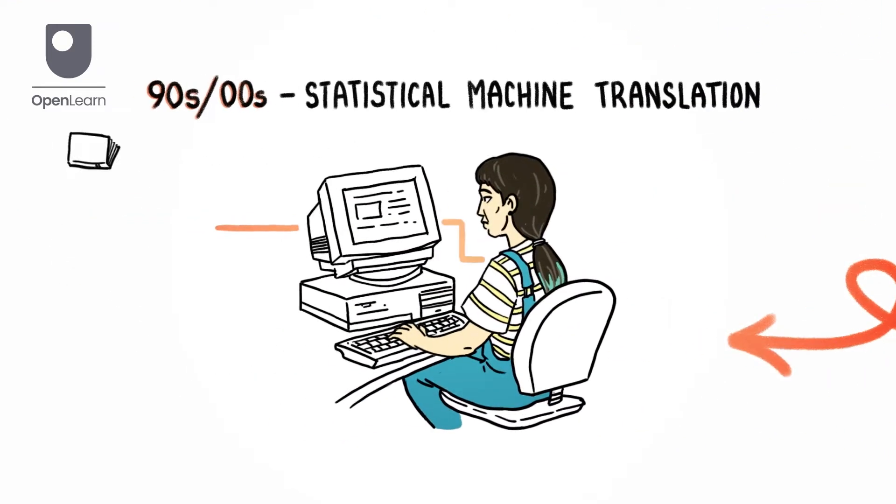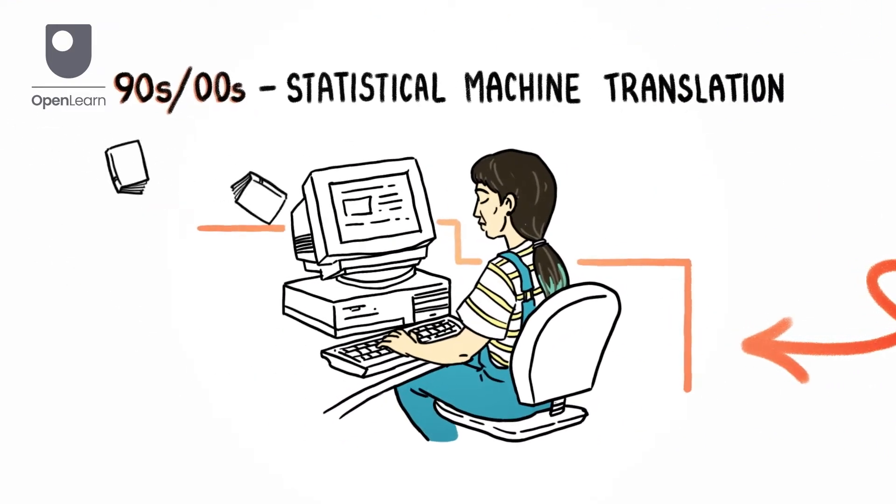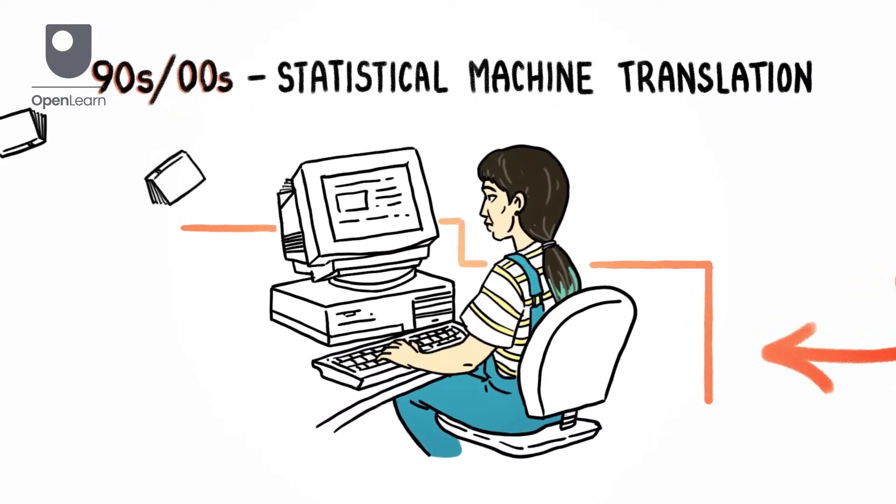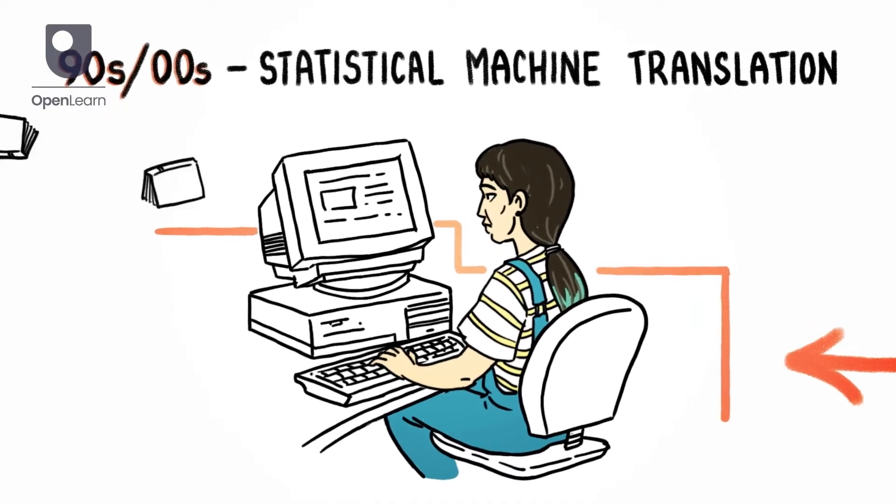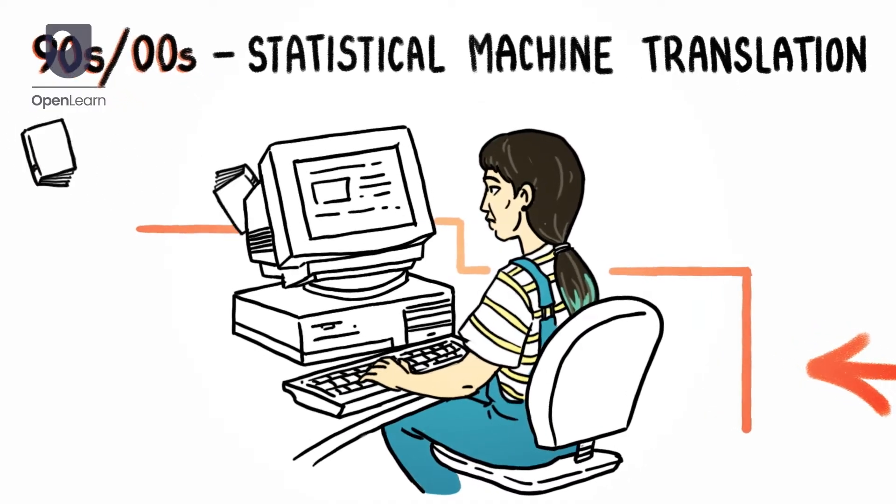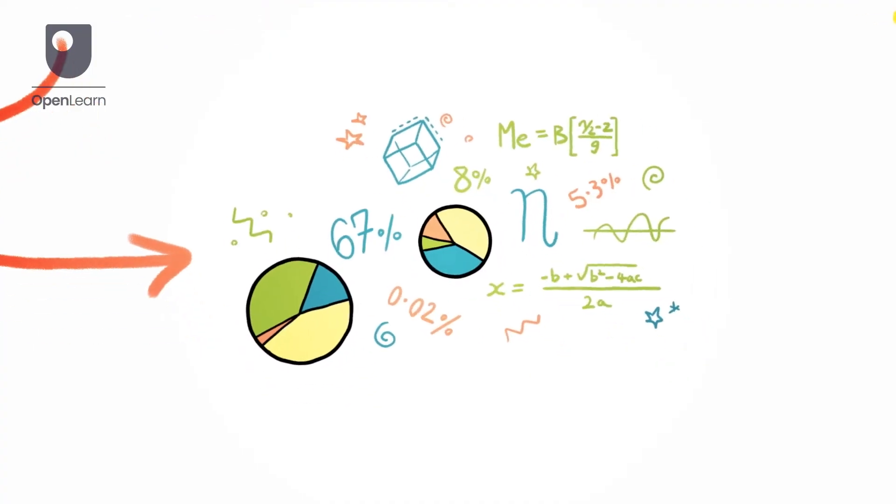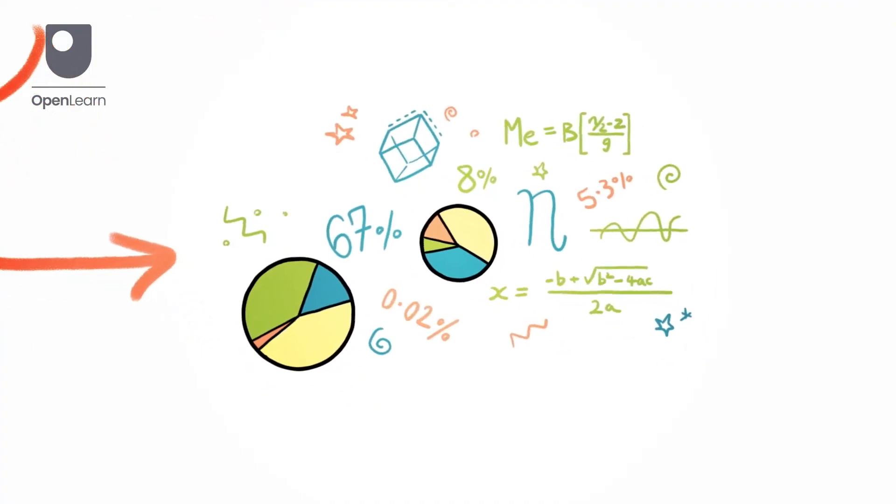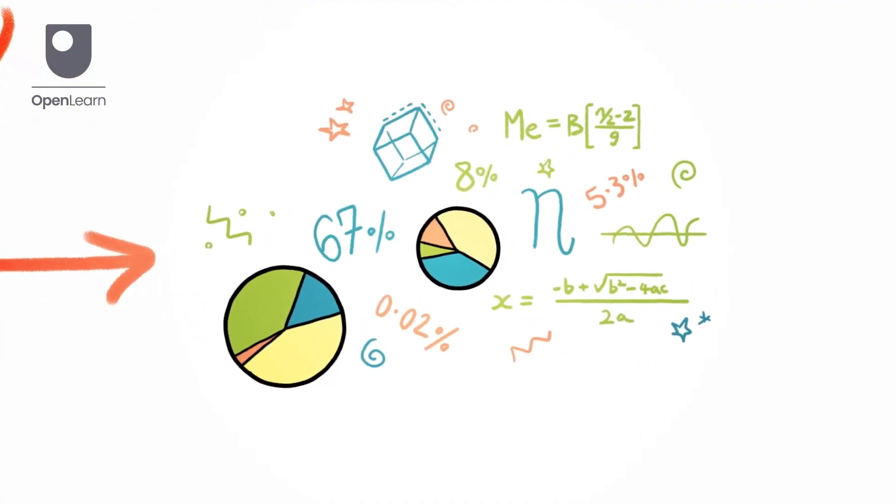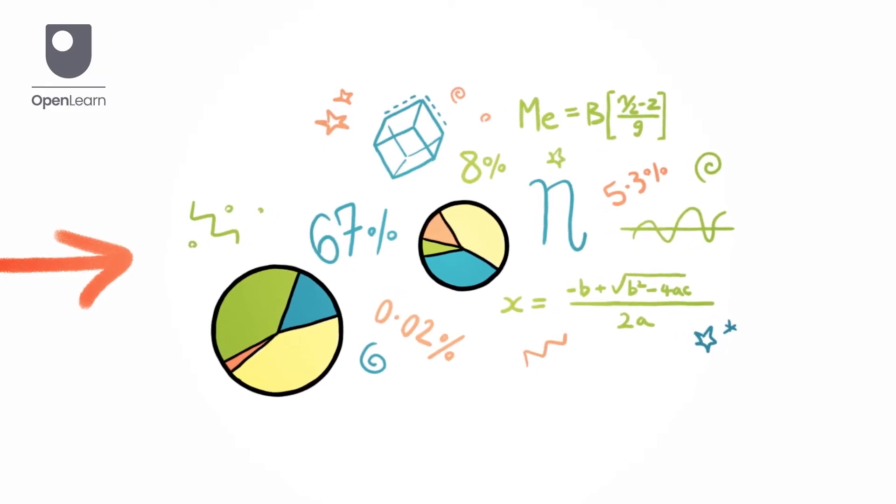By the 90s, the proliferation of texts on the World Wide Web and the computational power of machines led to statistical machine translation. This method used frequency and probability rather than rules or examples to produce translations.